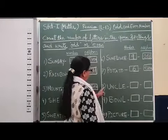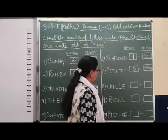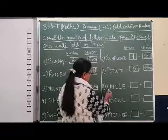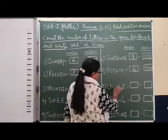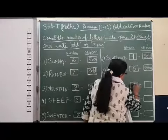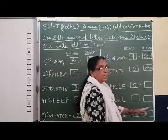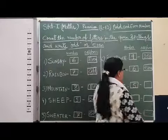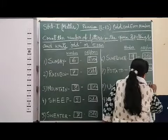Number eight: U, N, C, L, E — Uncle. How many letters are there? One, two, three, four, five. Again, one, three, five, seven, nine are odd numbers. So this is an odd number.